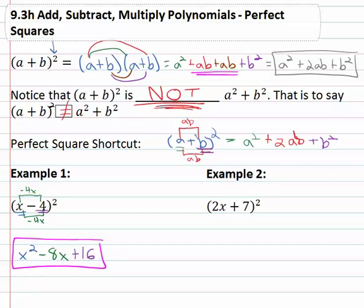Let's try one more example as we get used to this new pattern as a shortcut for squaring a binomial. Two x plus seven squared, we'll start by squaring the first term. Two squared is four, x squared.